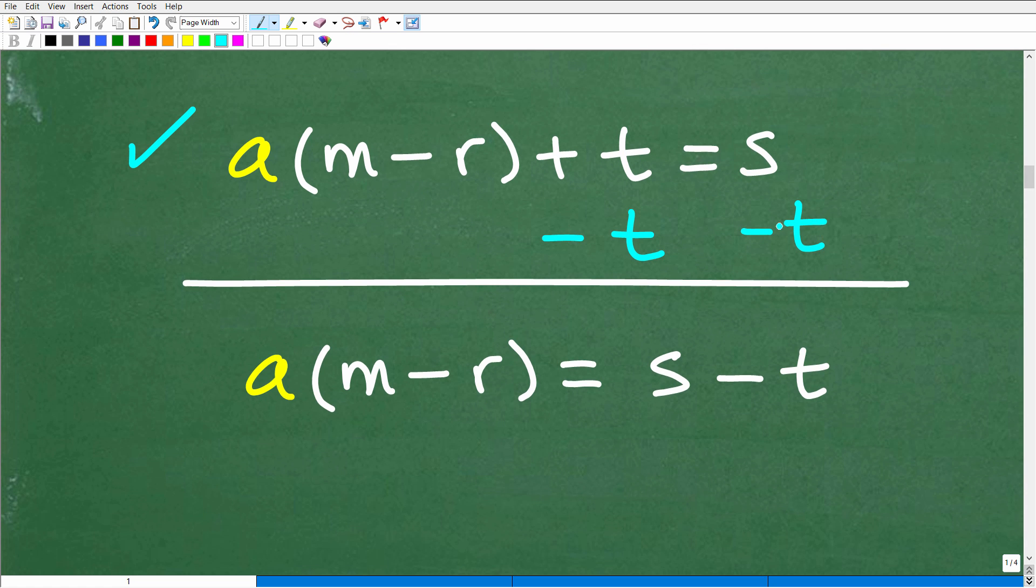Another thing we could do is subtract T from both sides of the equation. And this is what we want to do. So we're going to leave this A just right where it's at. And we're going to start isolating this A to one side of the equation. So let's go ahead and see the result of doing that. When we subtract T from both sides of the equation, now I have A times M minus R is equal to S minus T. So we're kind of adding down in a common manner. This would be S plus a negative T or S minus T.